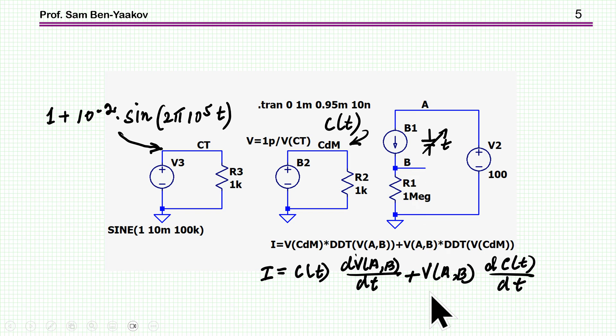So here is an example. What I have here first of all is a dependent current source defined by this equation. Now the problem is that LTSpice recognizes variables like voltage and current, but here we need to take a derivative of the capacitance. So to overcome this issue, I am coding or emulating the capacitance as a voltage. Here it is. This is the voltage which represents the capacitance at any given time.